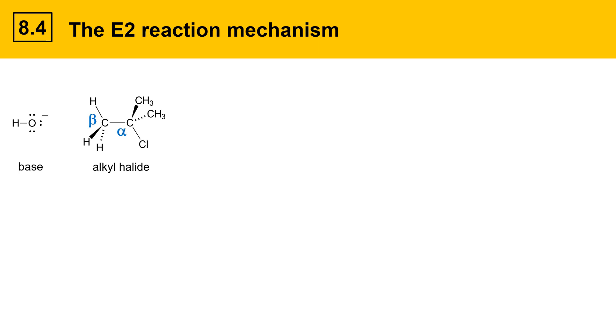Here, the base is going to pluck a proton off of the beta position on the alkyl halide and electrons will flow to form a new carbon-carbon double bond between the alpha and beta positions as the leaving group leaves.